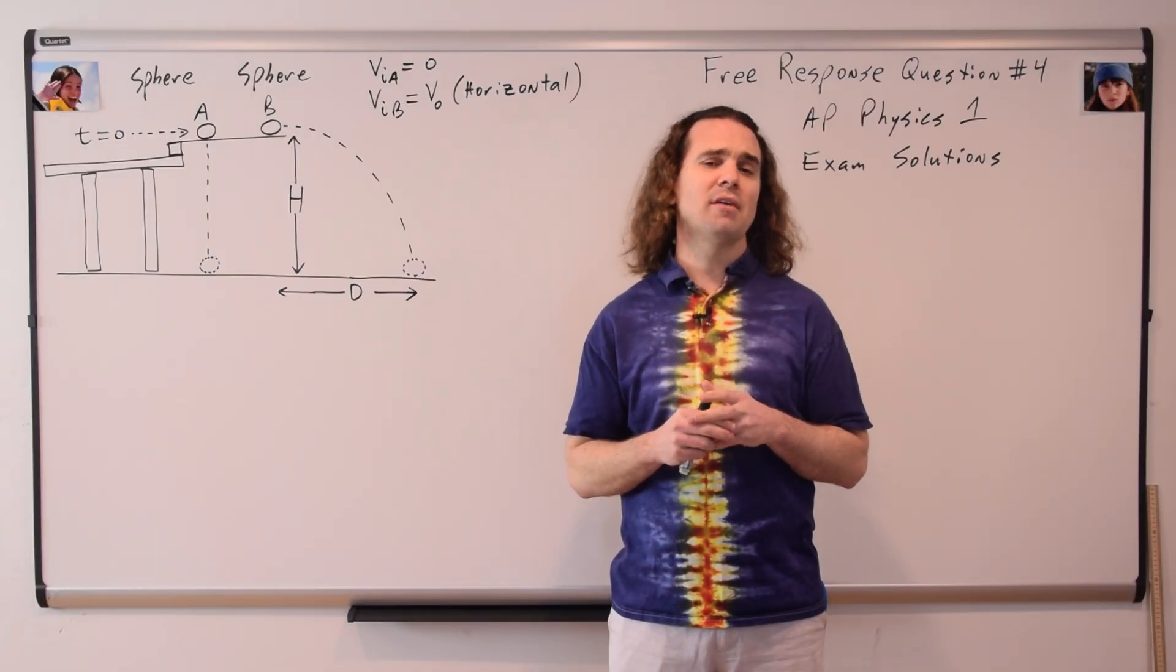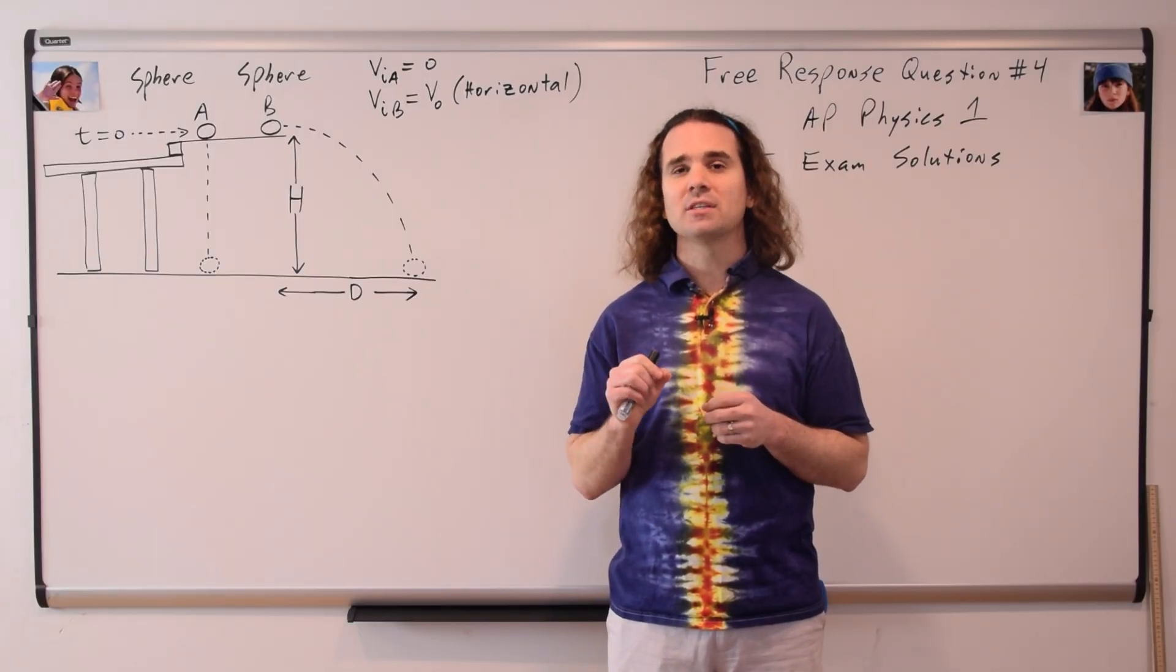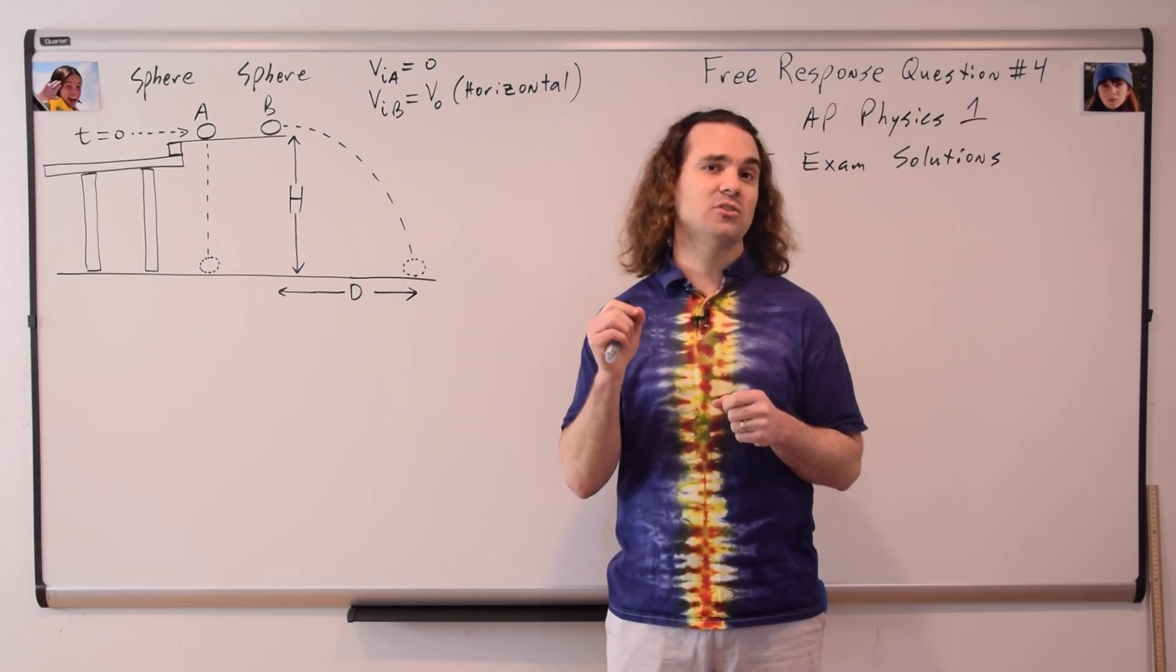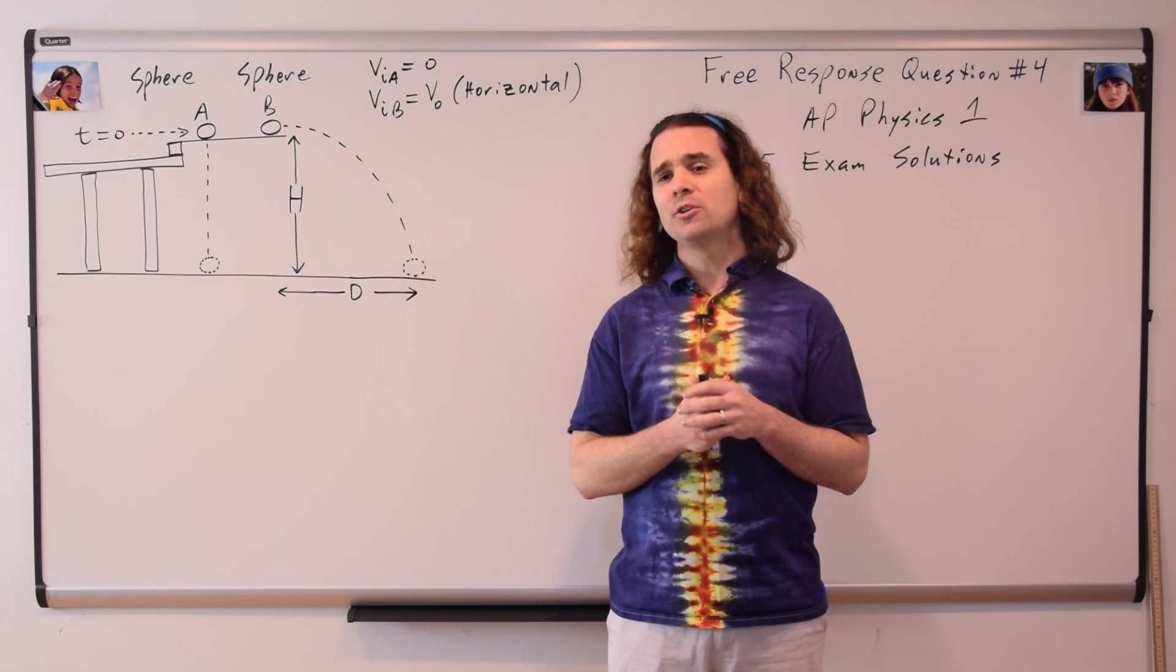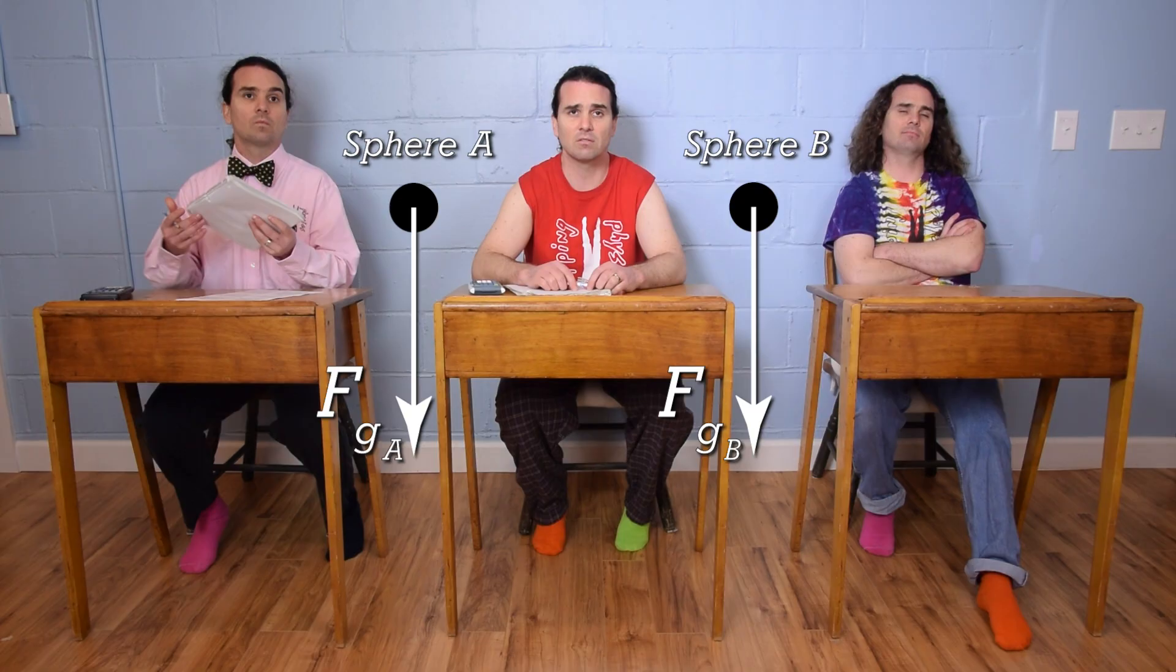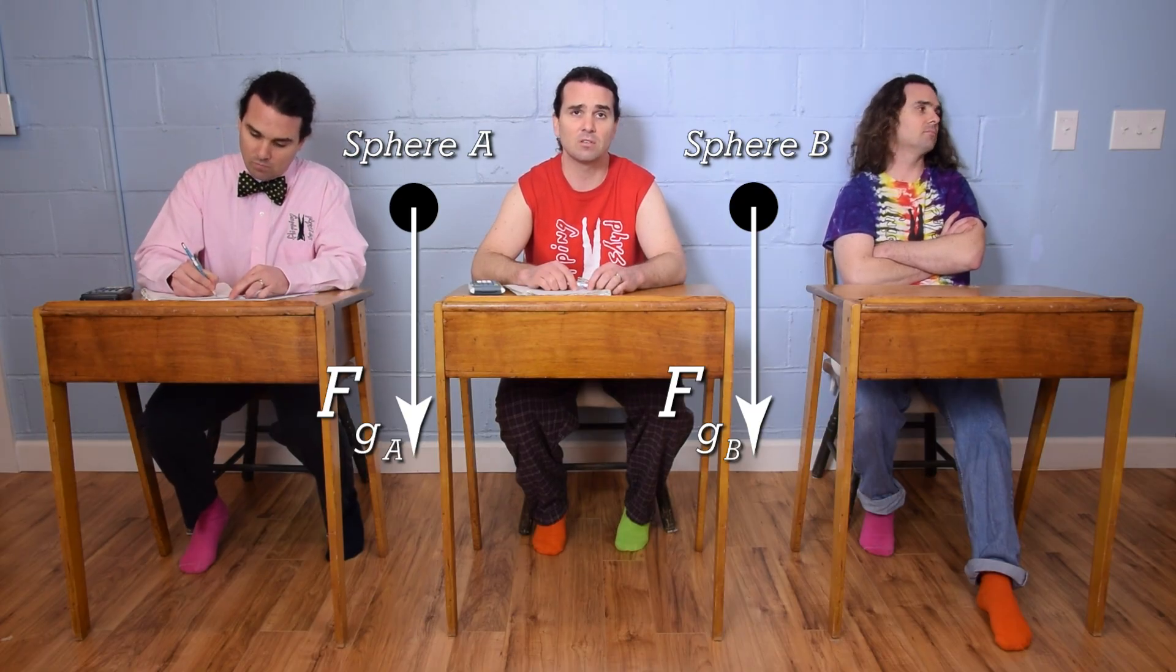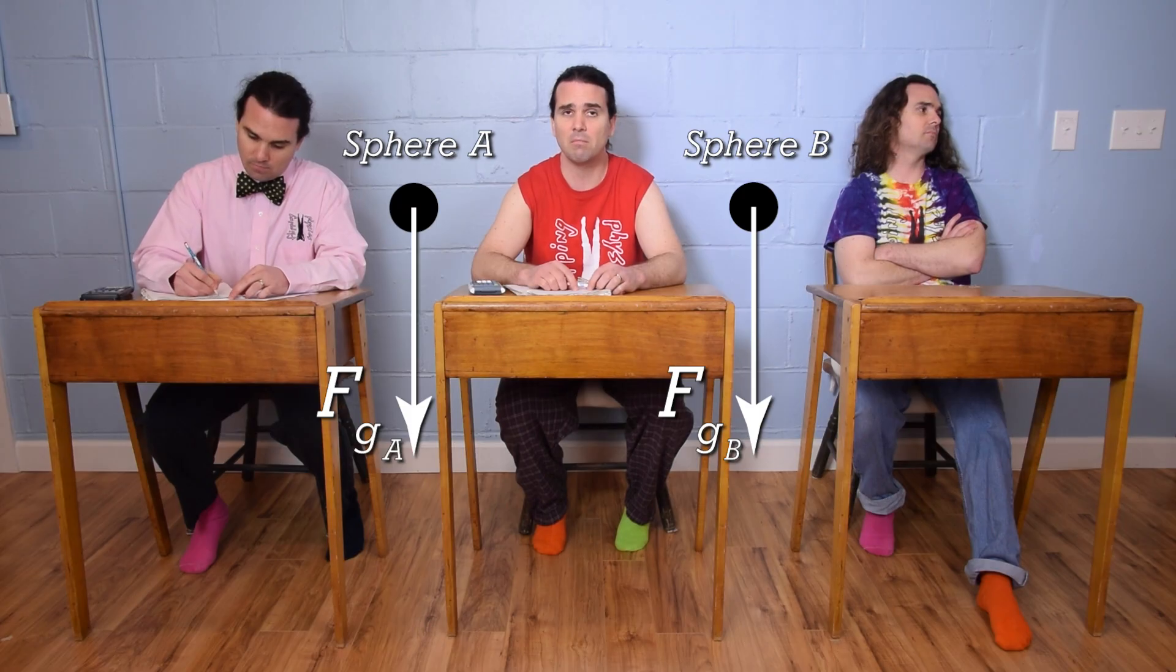Part A asks us to draw free body diagrams of all the forces acting on each sphere after they have taken half the time it takes to reach the ground. Bobby, could you please do that? Both spheres just have one force acting on them, it's just the force of gravity, and both spheres have the same mass, so the force of gravity should be of the same magnitude.